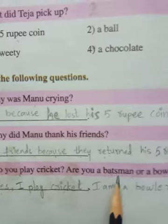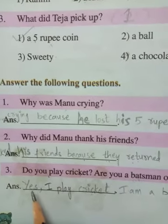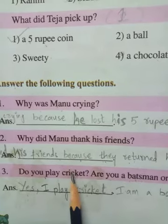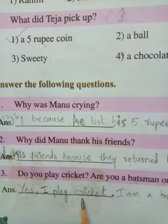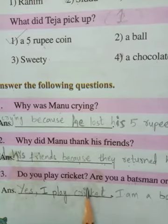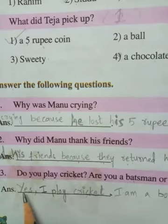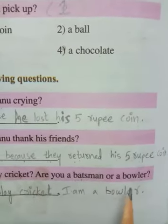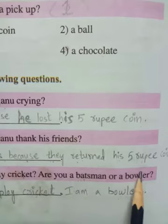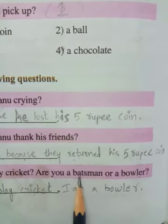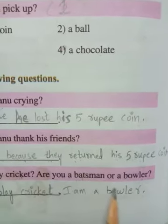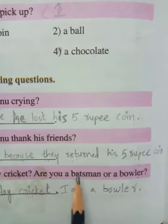Do you play cricket? Are you a batsman or a bowler? If you play cricket, write 'Yes, I play cricket.' If you don't play cricket, write 'No, I do not play cricket.' I play cricket, so I wrote yes. A batsman is the one who hits the ball, and a bowler is the one who throws the ball.